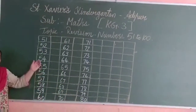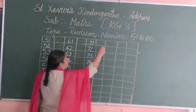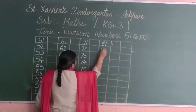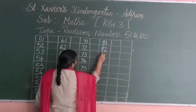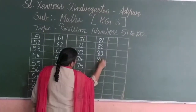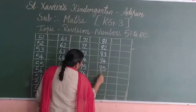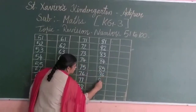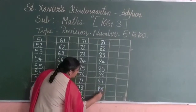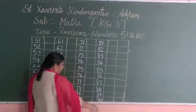Students, have you all finished writing up to 80? Okay. Now, 81, 82, 83, 84, 85, 86, 87, 88, 89, 90.